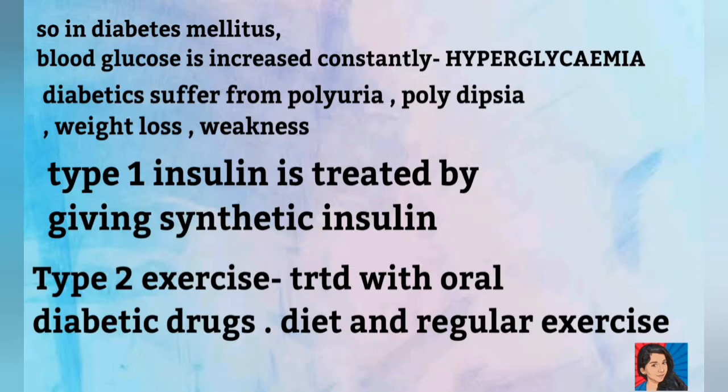For type 1, we can treat with synthetic insulin. Type 2 is insulin resistance, so treatment includes exercise, oral diabetic drugs, and a controlled diet. That is how we treat type 2 diabetes.